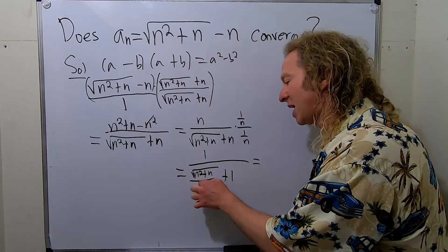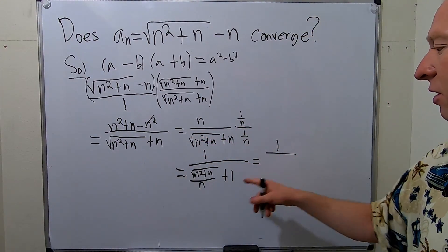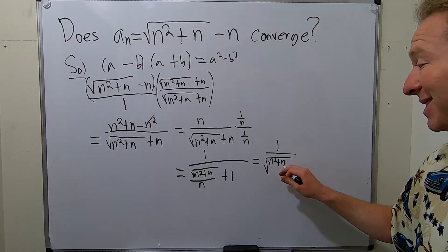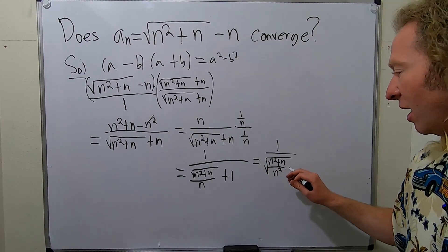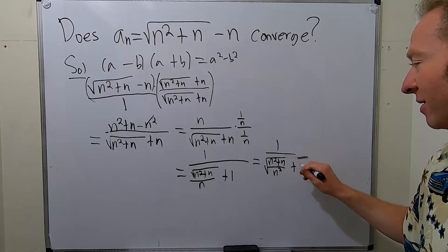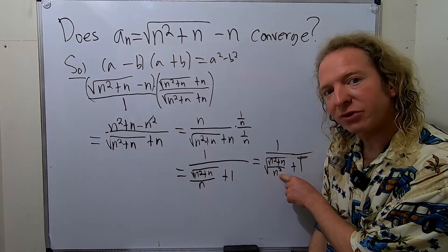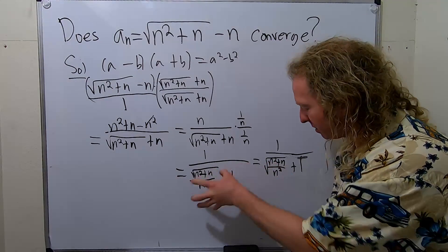Let's show another step here. That times that is that, that times that is that. Now here's the key. You can bring this inside the square root by writing it as n squared like this. And if you think about it, it does make sense. Because if you take the square root of n squared, you get n. So this step is perfectly okay.